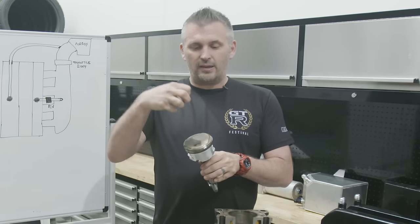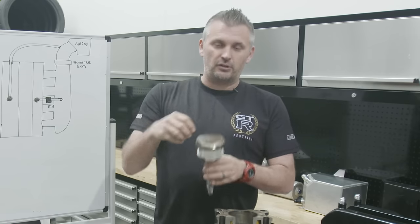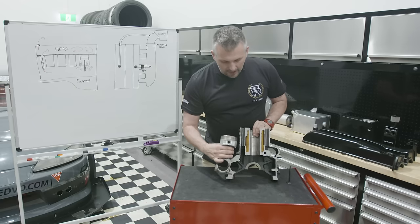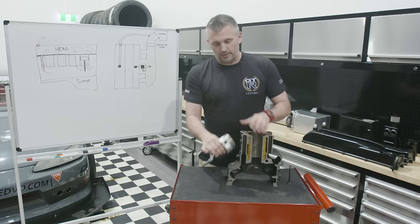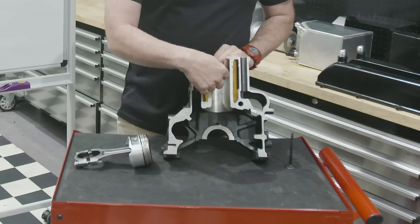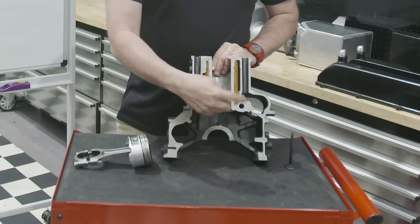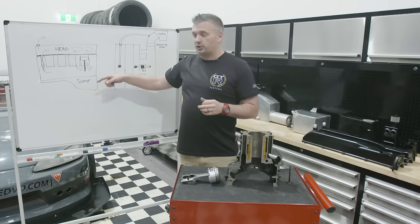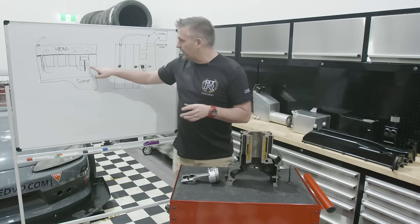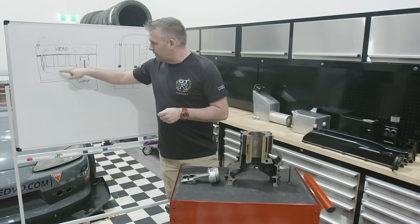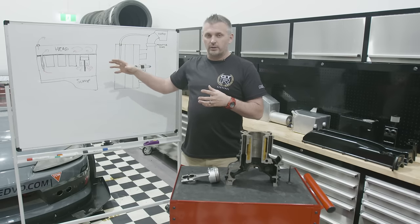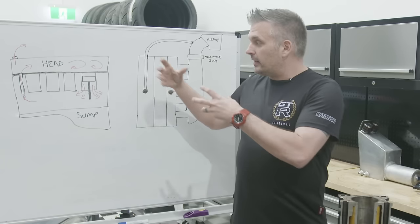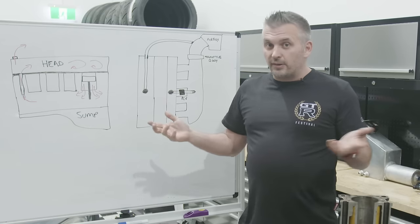One of the byproducts of the combustion process is that when the explosion happens during the combustion cycle and pushes down on the cylinder, some of those exhaust gases will actually go around the piston and past the piston rings. That exhaust gas goes down inside the block, and since the block and head are attached with oil feeds and drains, it'll go back up into the head and basically pressurize all of the inside of your engine.